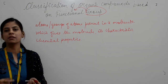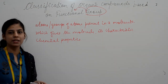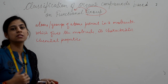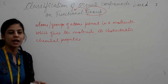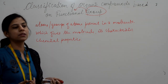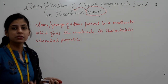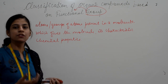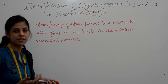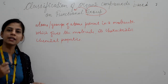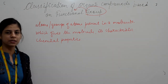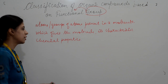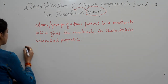Whereas chemical properties are those properties in which the identity of the substance changes. Examples include toxicity, reactivity, heat of combustion, etc. Let us see a hypothetical equation to illustrate this.